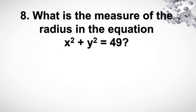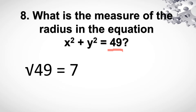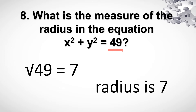Number 8. What's the measure of the radius in the equation x squared plus y squared is equal to 49? Ito yung makukuha natin ang value ng ating radius. You just get the square root. So yung square root ng 49 is equal to 7. So ibig sabihin, ang radius natin is 7.